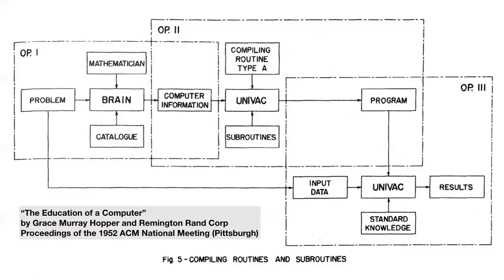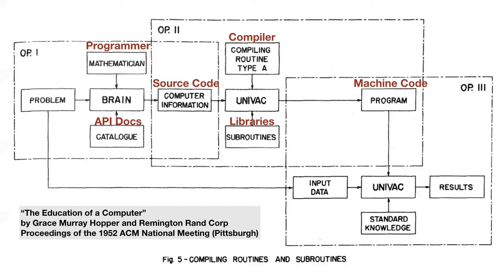This is a diagram out of a paper that she wrote in 1952. I find it really interesting that she had to label 'brain goes here,' because she's really trying to explain the division of labor between the person and the computer — she was changing that division of labor in a very radical way. She had to come up with a lot of concepts we still recognize today: the idea that you would use your brain to read the API docs to write the source code, that the computer combined the libraries with your code.